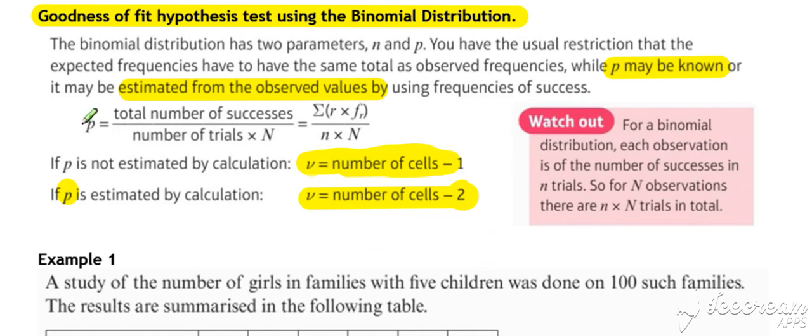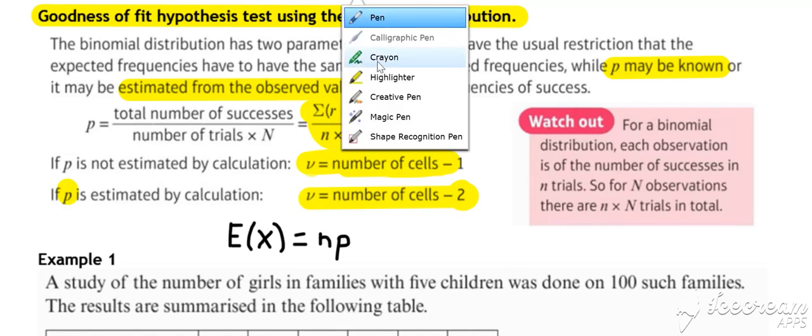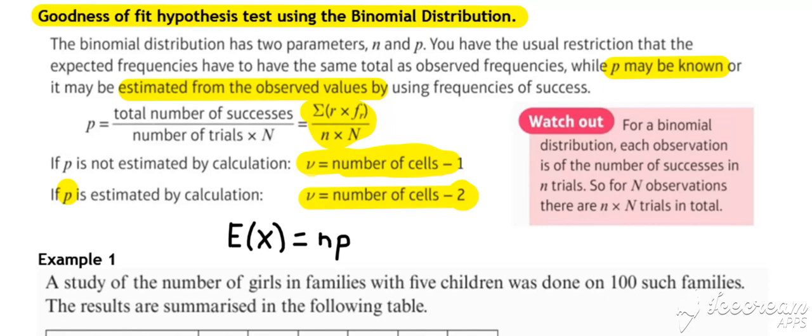The method for estimating P is you can use this formula. Or alternatively, you can just work out the mean of your table. You can do that on your calculator if you want. And because we know for a binomial that the expected value of the mean is equal to n times P, then if you work out your mean and divide it by n, that will give you your probability.